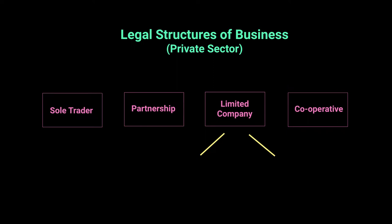Most businesses would start off as a sole trader — it's the easiest way to set up a business, you don't have to put much money down. Sole means one, so one trader, one person, one owner. If you need more finance and want to grow, you'd look to become a partnership. If you want even more finance, you'd become a limited company because they have a higher ability to generate finance. Cooperatives are slightly different and will be discussed separately.